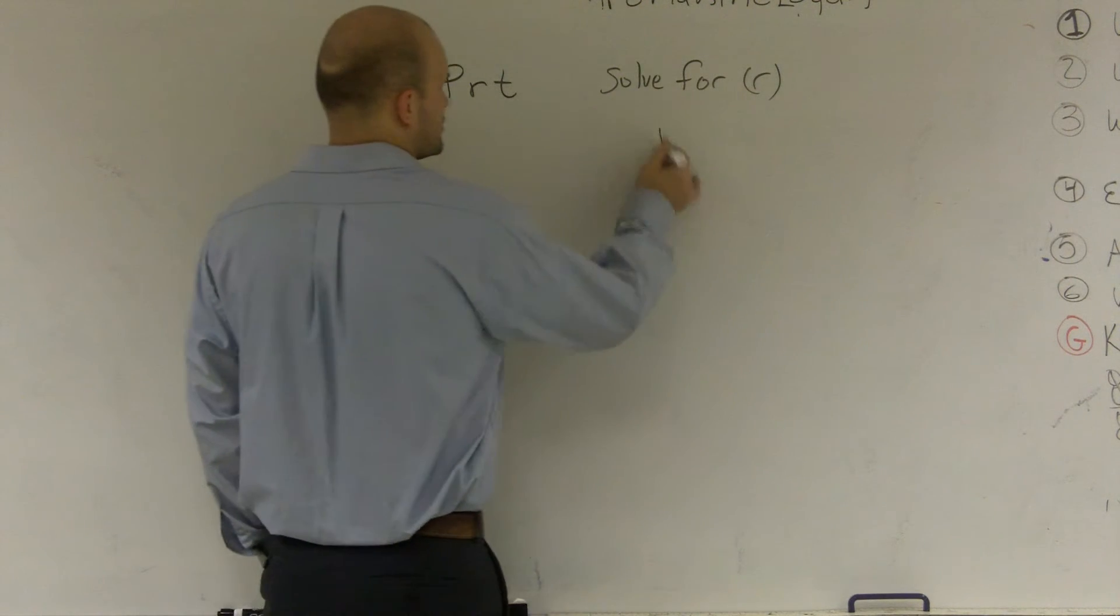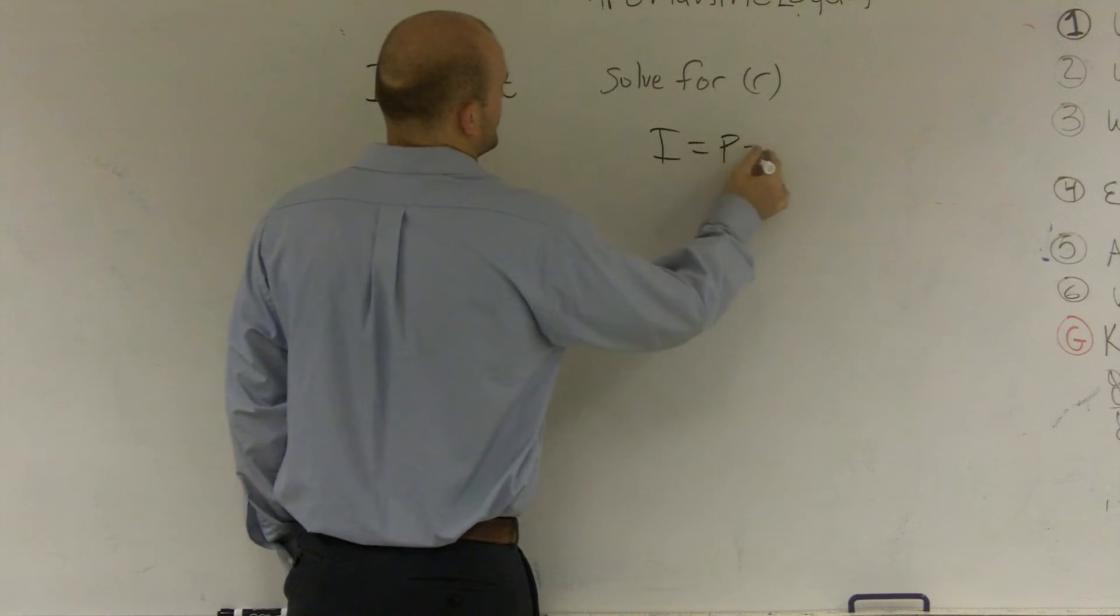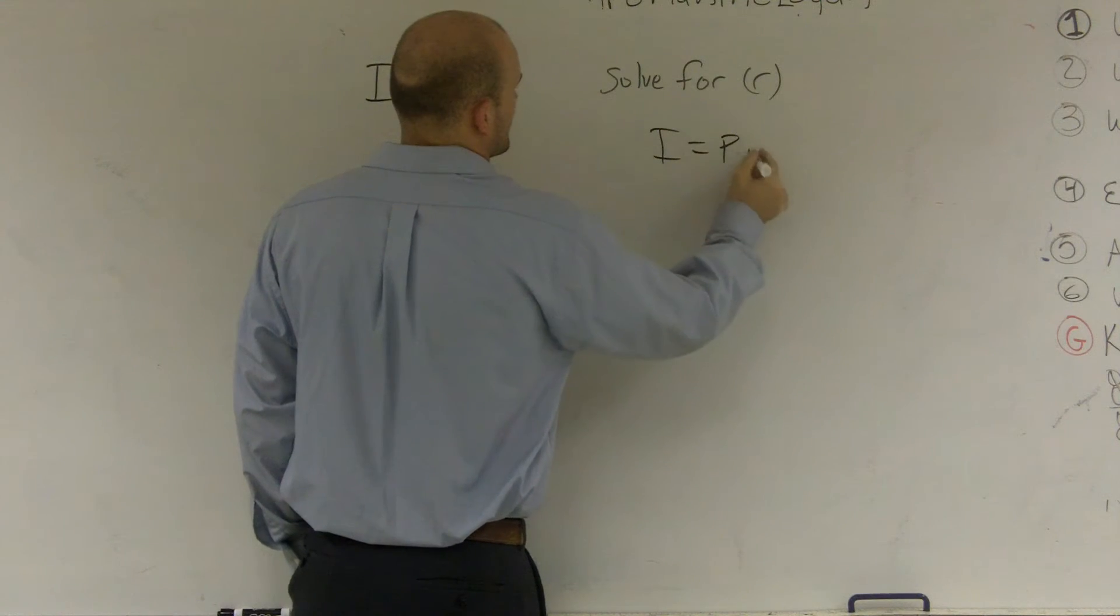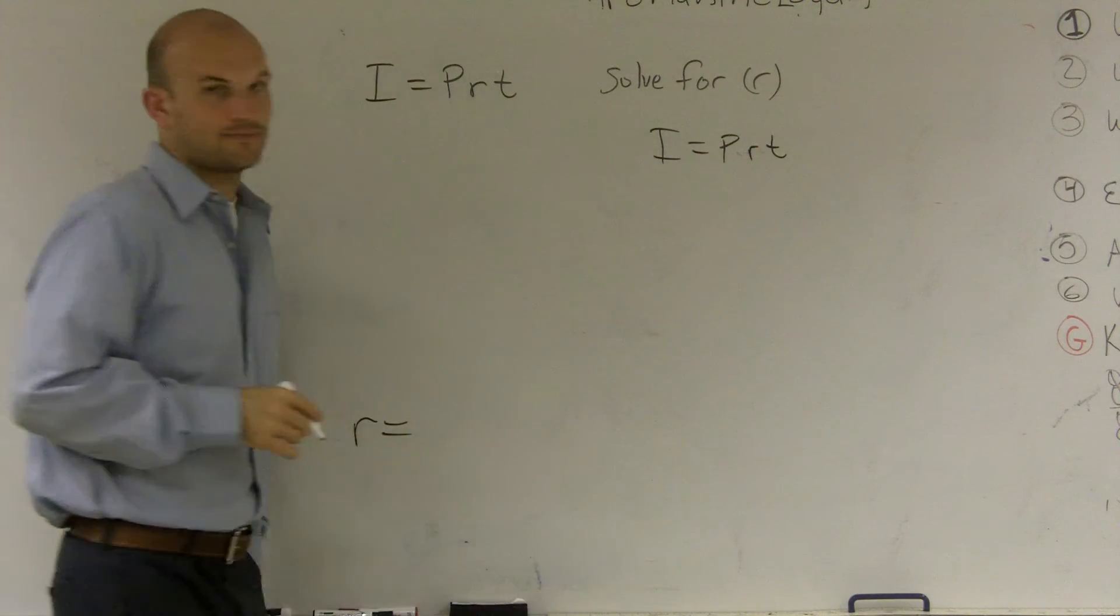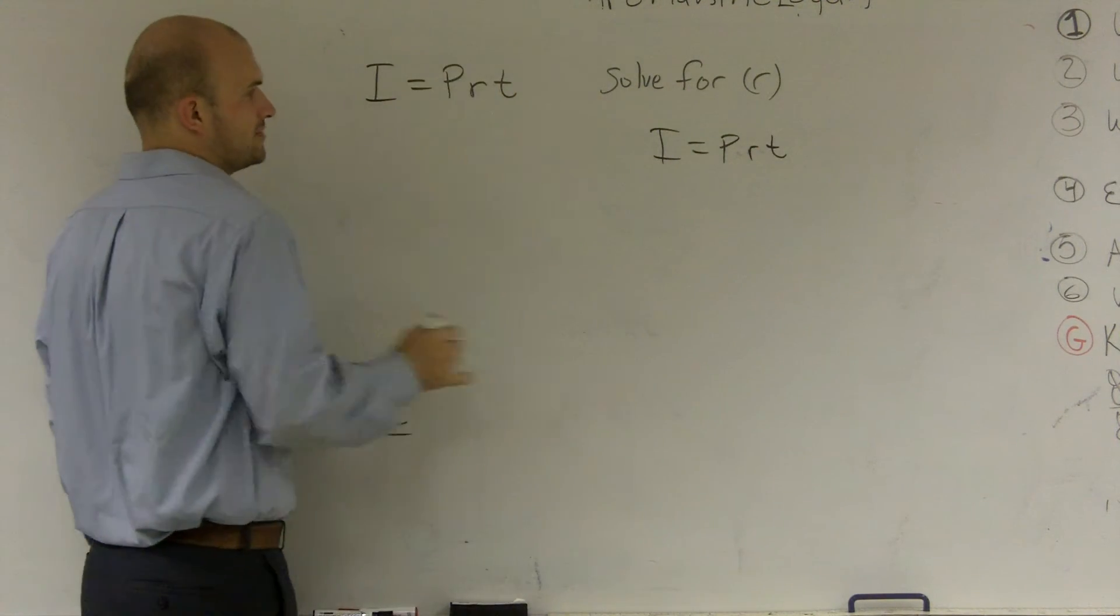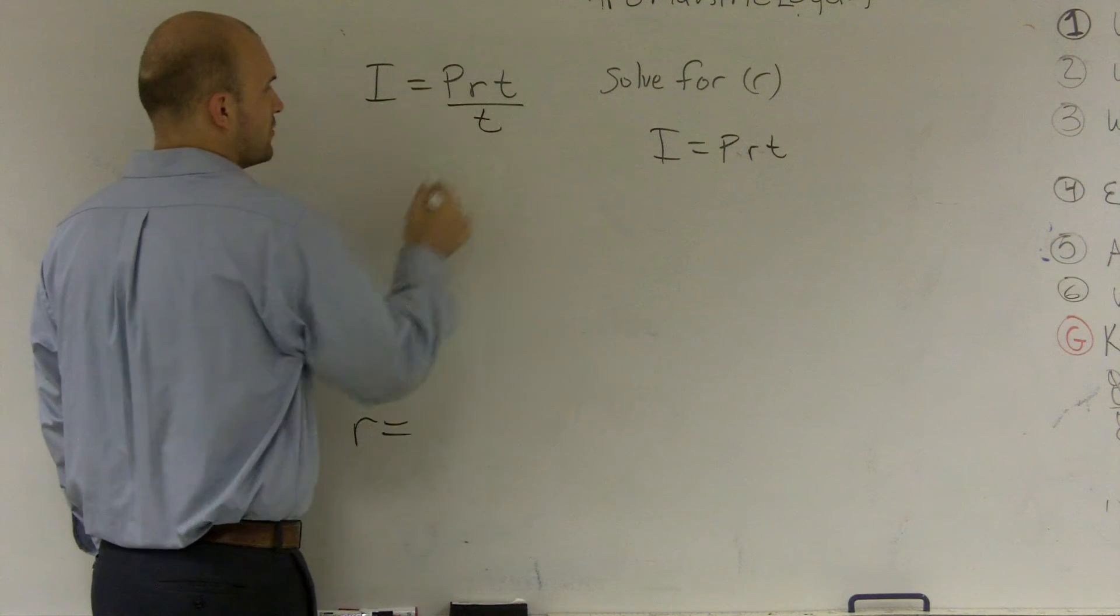So we're going to do this actually in two different ways. You could do it the slow way. To undo multiplication by t, you're going to want to divide by t.